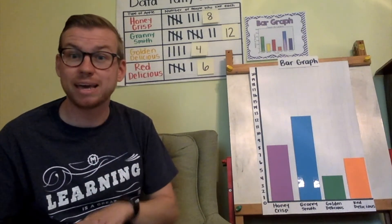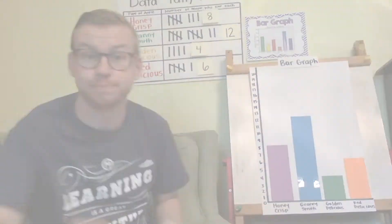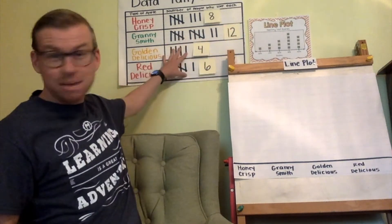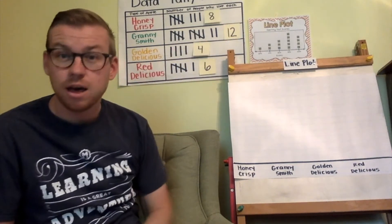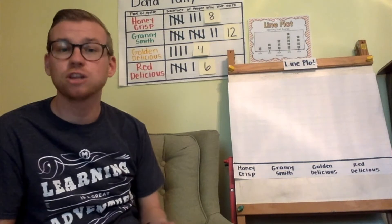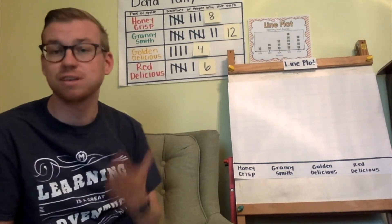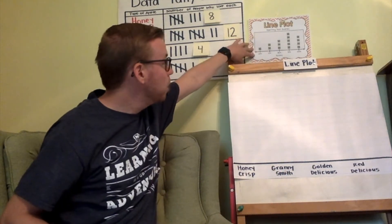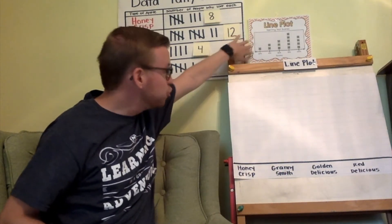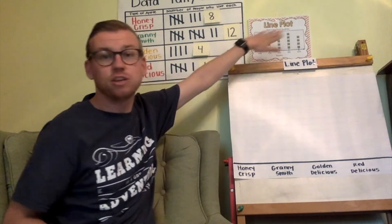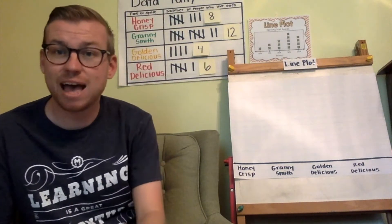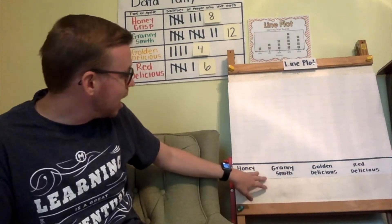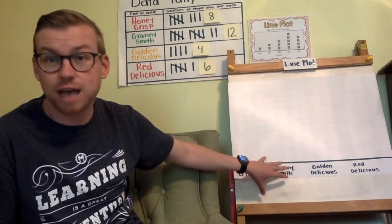Next we're going to look at making a line plot using the same data. Let's look at how this graph is going to look different than the bar graph. The line plot just has a straight line across the bottom and uses X's that go up — each X represents one person. I have the line plot here ready for us to add to.